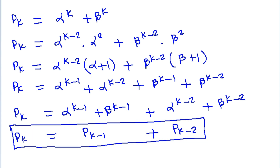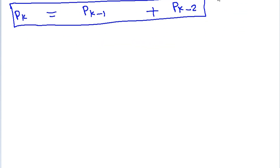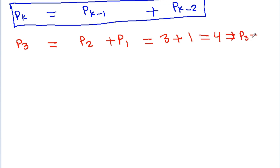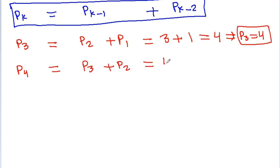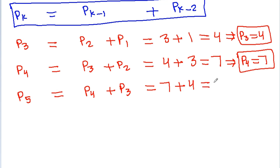Using p_1 equals 1 and p_2 equals 3 with the recurrence p_k equals p_{k-1} plus p_{k-2}: p_3 equals p_2 plus p_1 equals 3 plus 1 equals 4. Then p_4 equals p_3 plus p_2 equals 4 plus 3 equals 7. And p_5 equals p_4 plus p_3 equals 7 plus 4 equals 11.